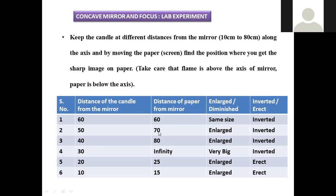When the candle is at 50 cm and the paper at 70 cm, a larger image is generated — somewhat bigger than the original — and it is inverted. When the candle is at 40 cm and the paper at 80 cm, the image is again enlarged and inverted in nature.